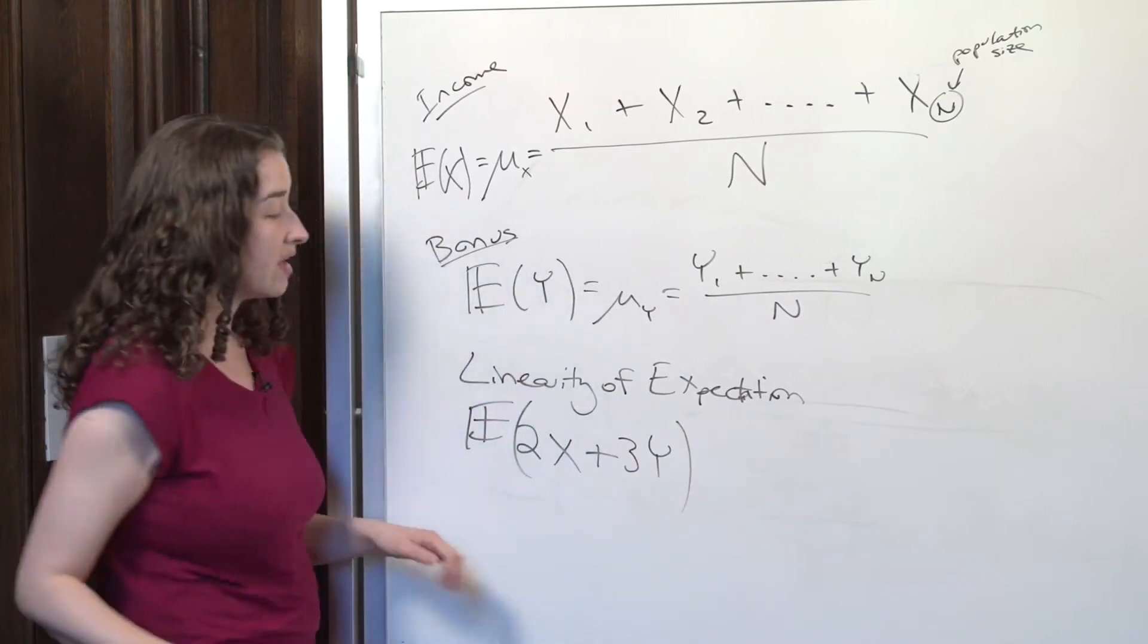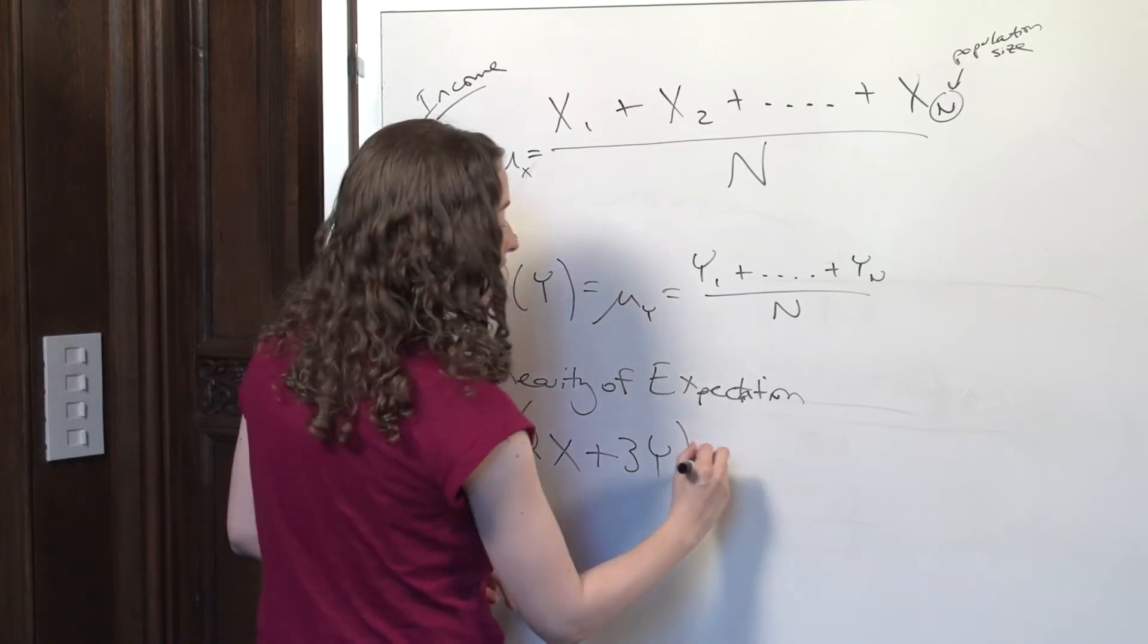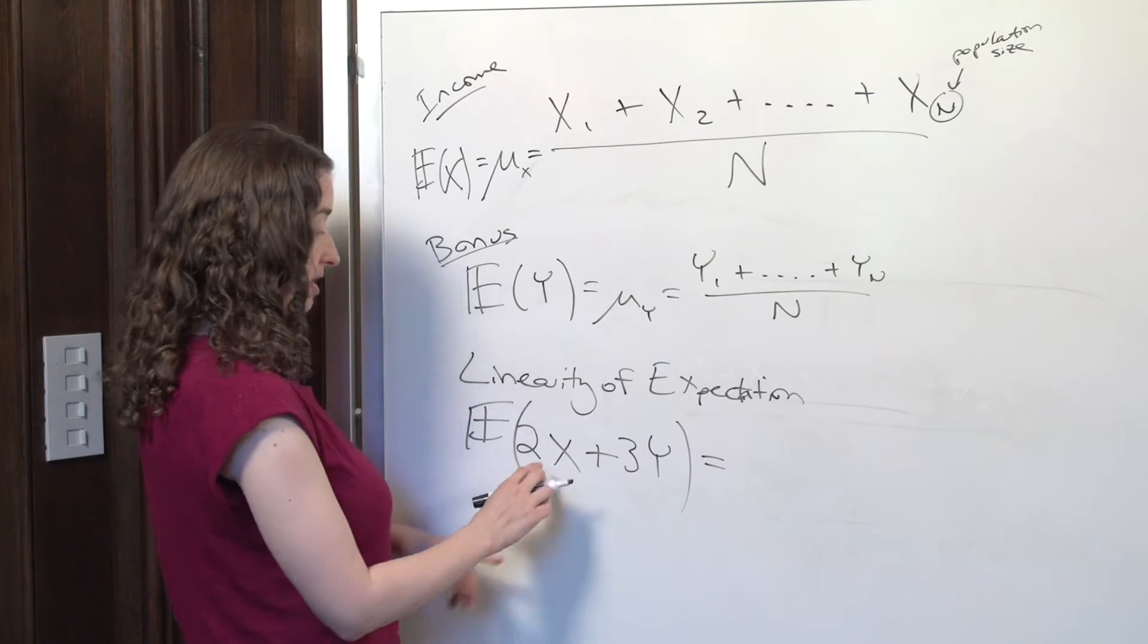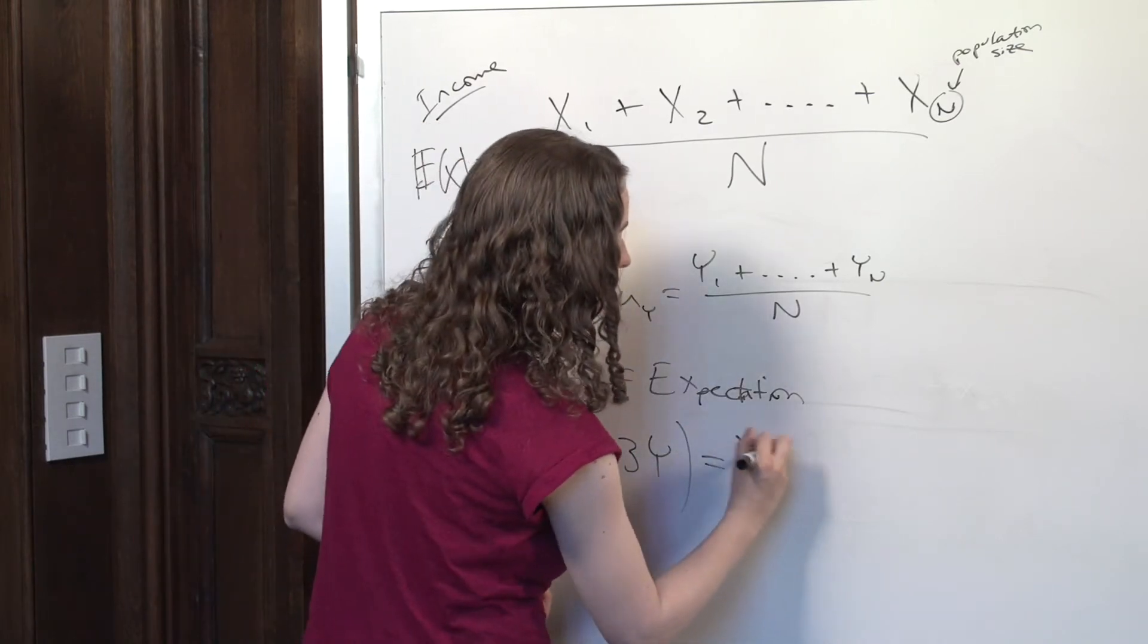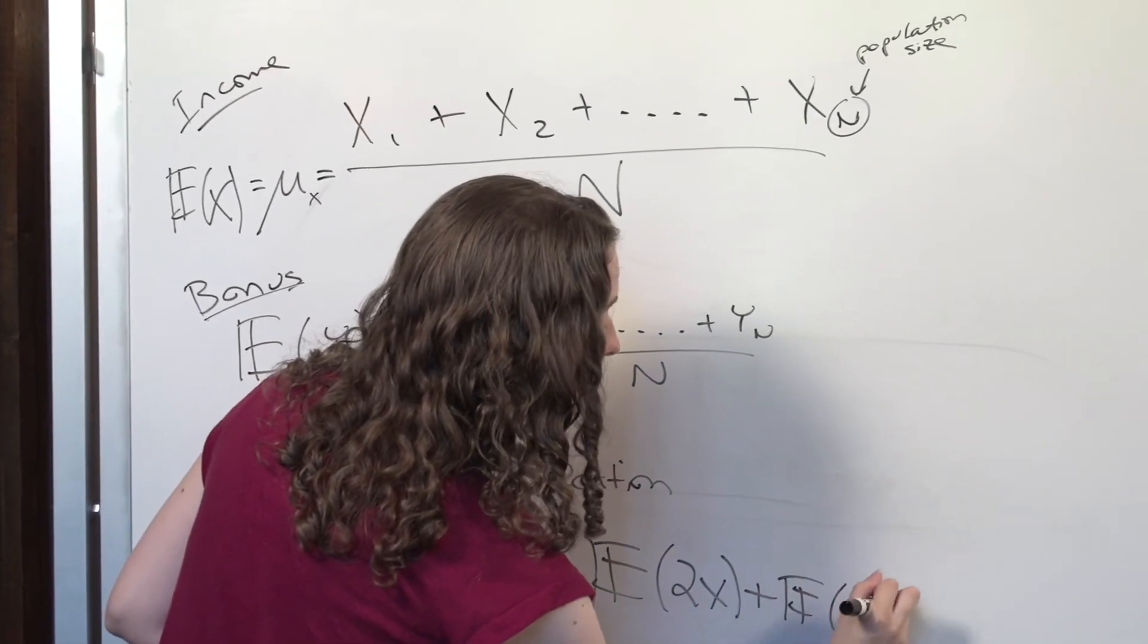On average, what would I get if I drew someone from this population and calculated this number? By combining the two ideas we've already talked about, we can note that the expectation of 2X plus 3Y is equal to the expected value of 2X plus the expected value of 3Y.